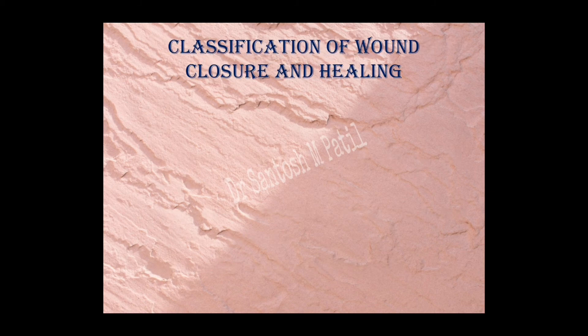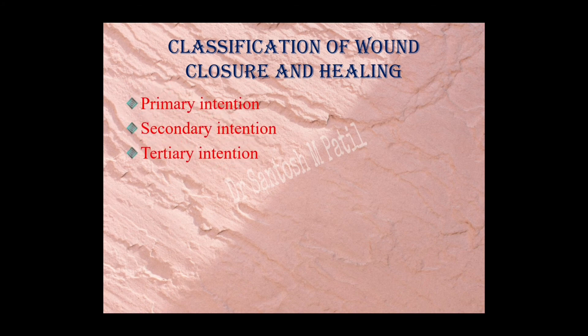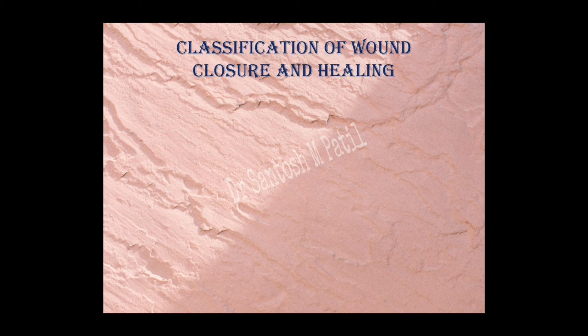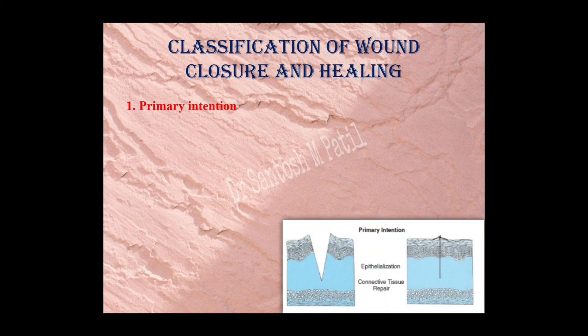Classification of wound healing: there are different types. Healing by primary intention is mainly for surgical incisions where there are precise cuts and healing takes place by normal process — all three phases of wound healing are seen. The picture shows proper epithelization and connective tissue repair as per the wound healing process, forming a healthy minimal scar or clean clear-cut scar.